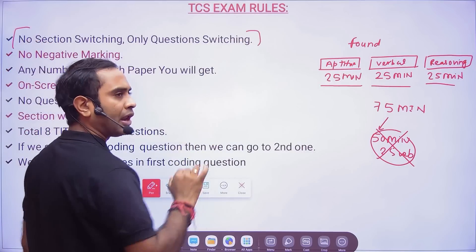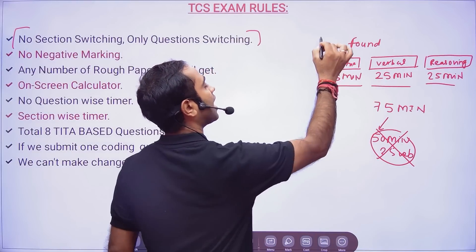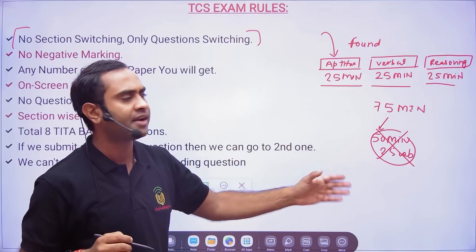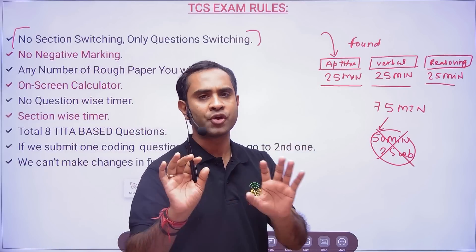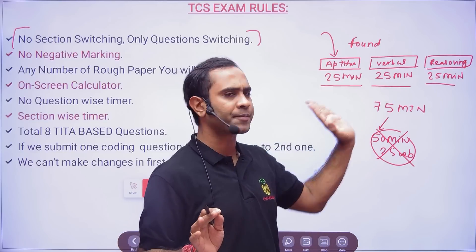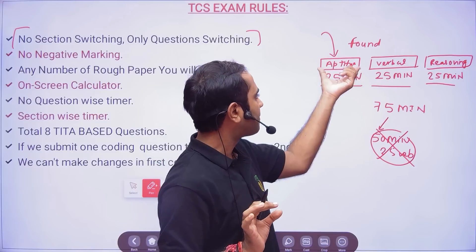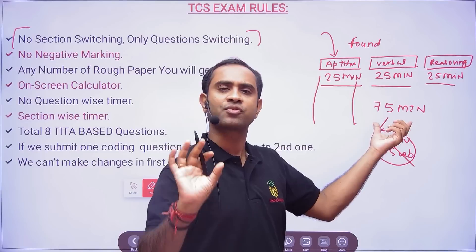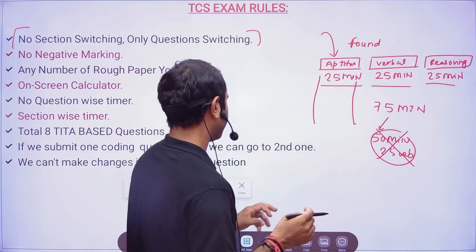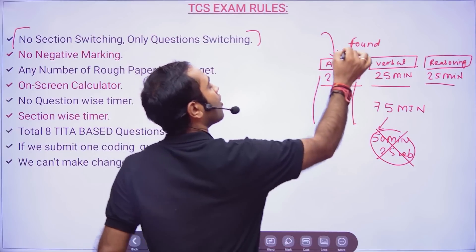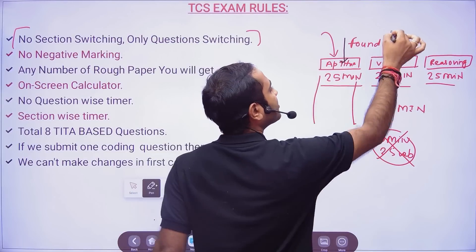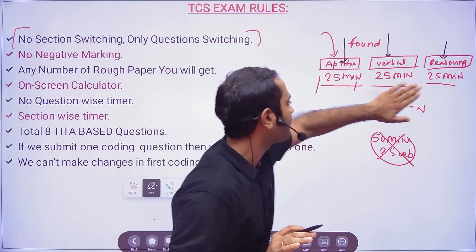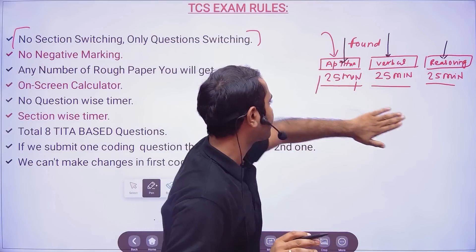You will be given the sections in a fixed order — for example, aptitude, reasoning, and verbal ability — and you must solve them in that order only. Whatever section comes first, you have 25 minutes for it. You will not have the option to choose which section to attempt first; you cannot say 'I want to solve verbal first' or 'I want to solve reasoning first.' That option will not be available in the examination.